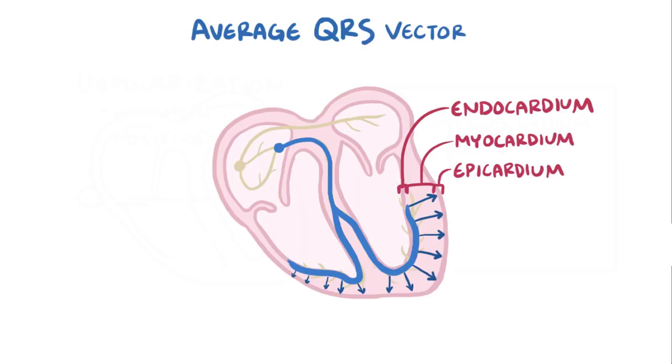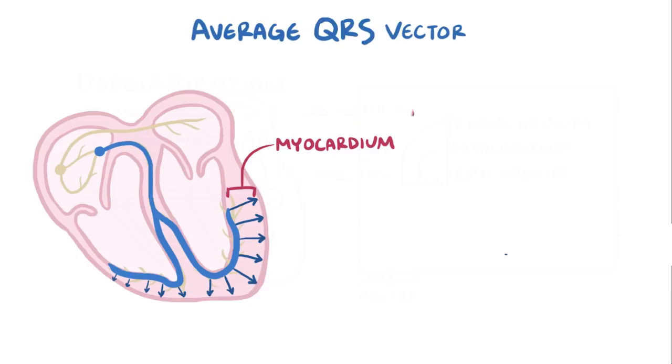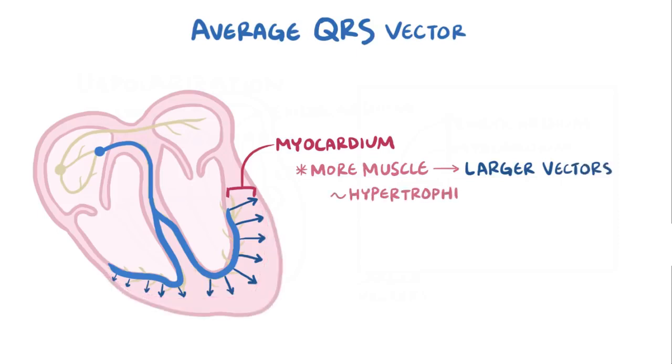And because they've transmitted depolarization waves so quickly, they all fire off pretty much in unison. Also, the more muscle tissue in the myocardial layer that a vector travels through, the larger the size of the vector. So like with hypertrophic cardiomyopathy, where the heart muscle gets thicker, you end up with bigger vectors.